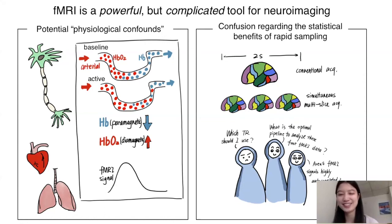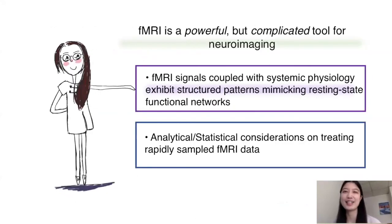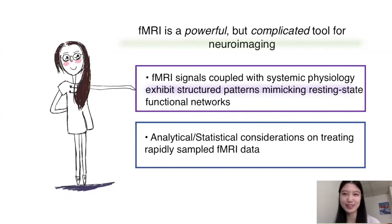For the second topic, there's confusion regarding the benefits of faster sampling. Due to recent advances in MR techniques, it's now possible to acquire brain snapshots within a much shorter time. When I was a graduate student at Stanford, many people asked: how fast is fast enough for my specific study? And when you sample data in a faster regime, the signal characteristics are quite different — what is the optimal pipeline to analyze this faster fMRI data?